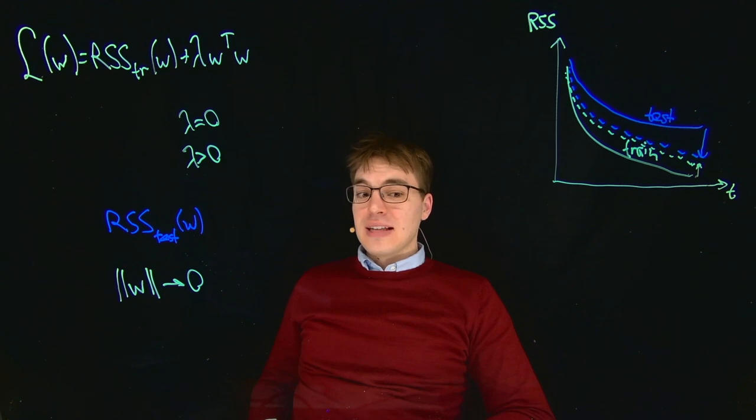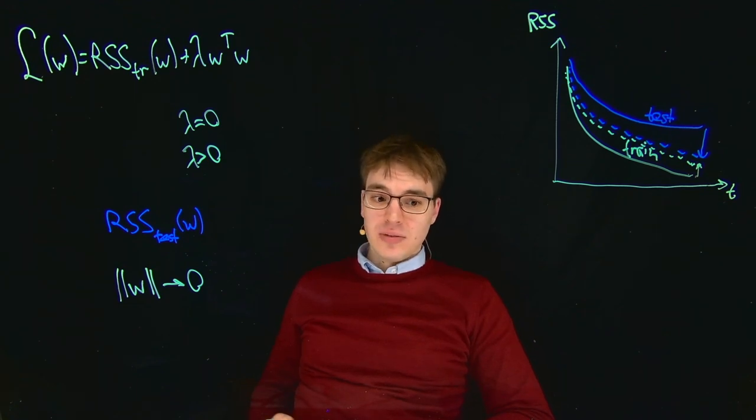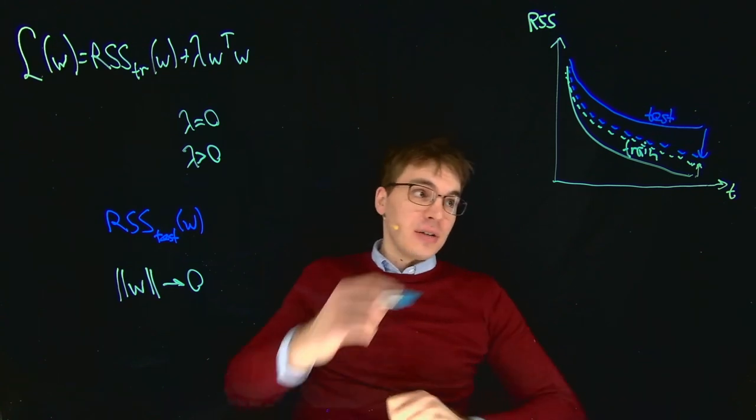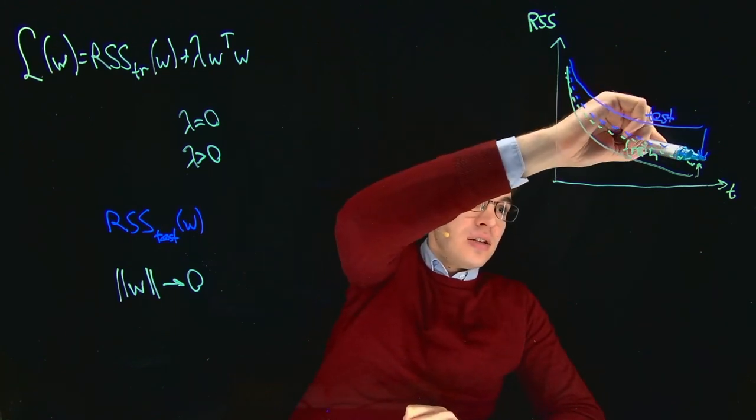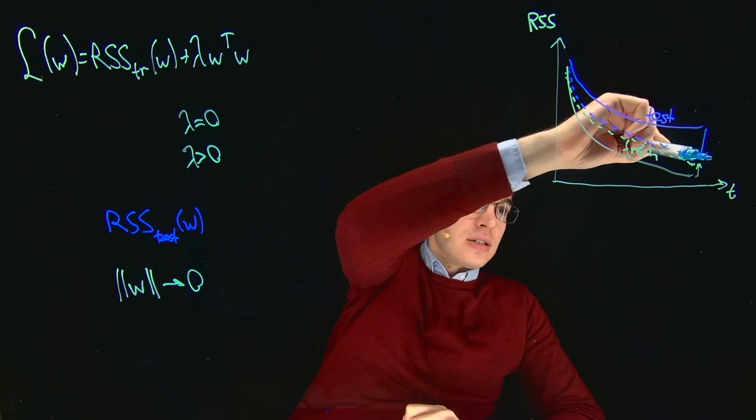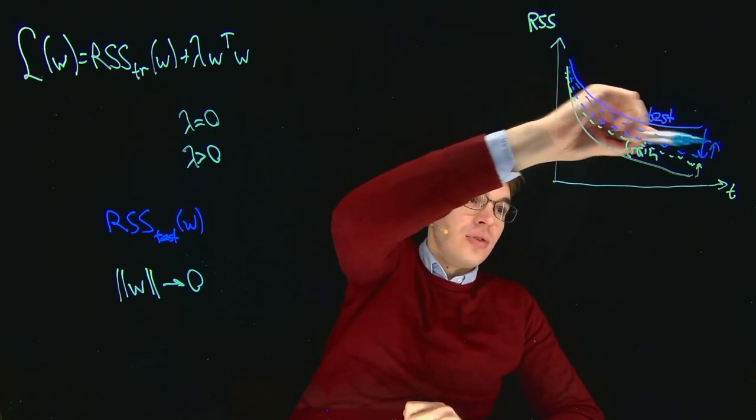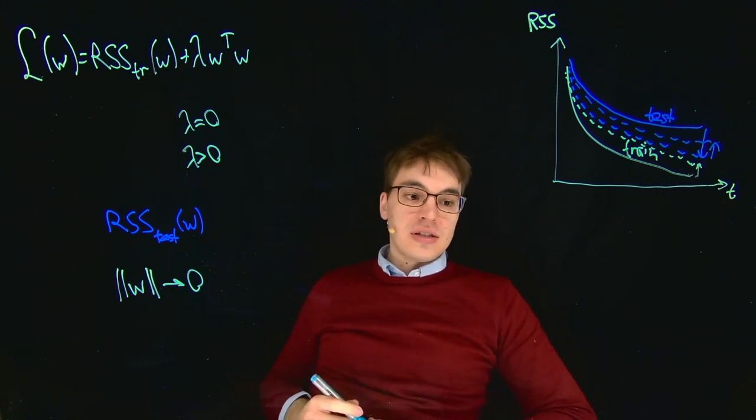So at some point it doesn't work anymore. If you choose some lambda that is way too large, then this value here again will increase. So the final value will be something like this, and this is not optimal again.